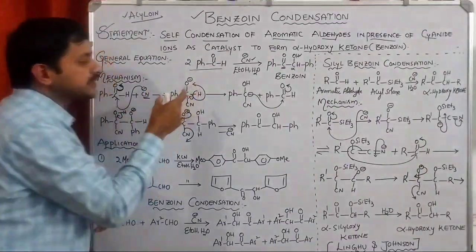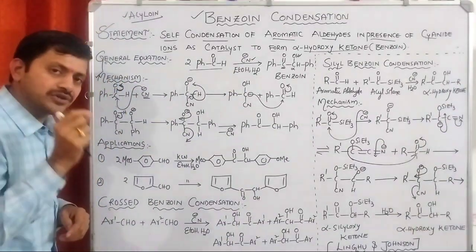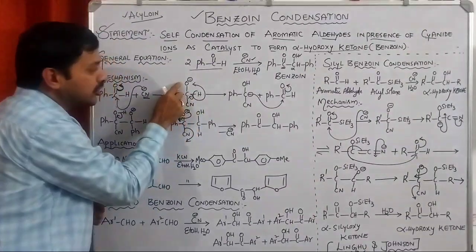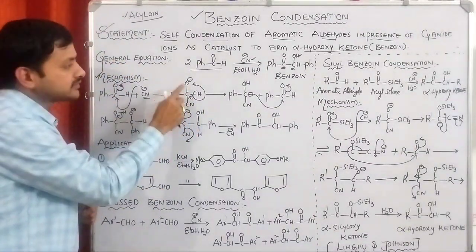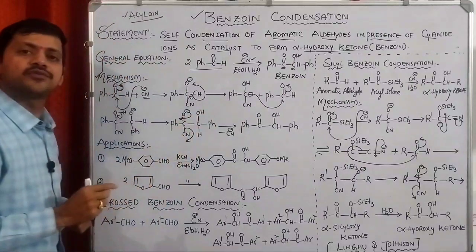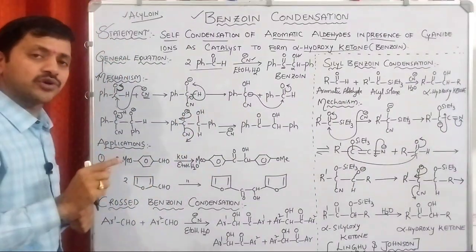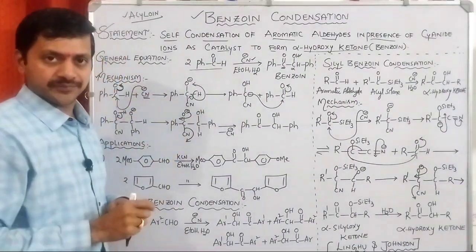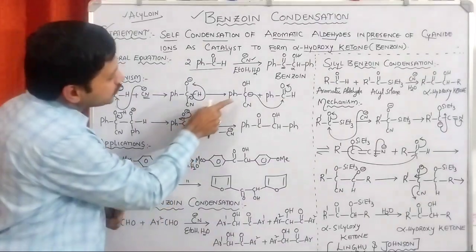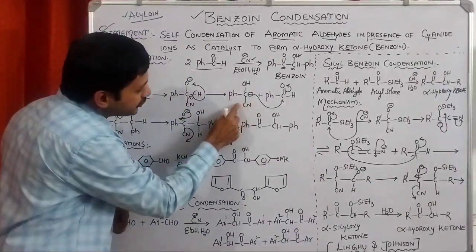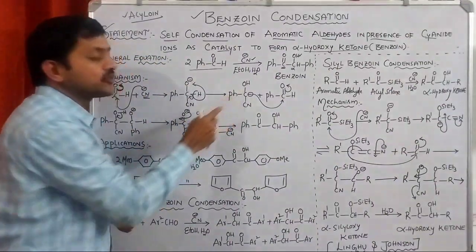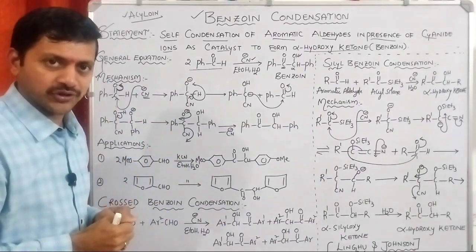The second step is very important. Transfer of H⁺ takes place from the carbon to the O⁻, producing OH while the carbon gets a negative charge — we have created a carbanion. An electron-withdrawing group is attached to this carbon, and the carbanion is stabilized by that electron-withdrawing group.